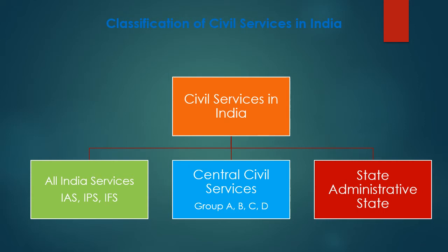Services were classified into imperial civil service, provincial civil service, and subordinate services. After independence, this was reorganized. The Lee Commission of 1923 classified services into All India Services, central services, and provincial services.